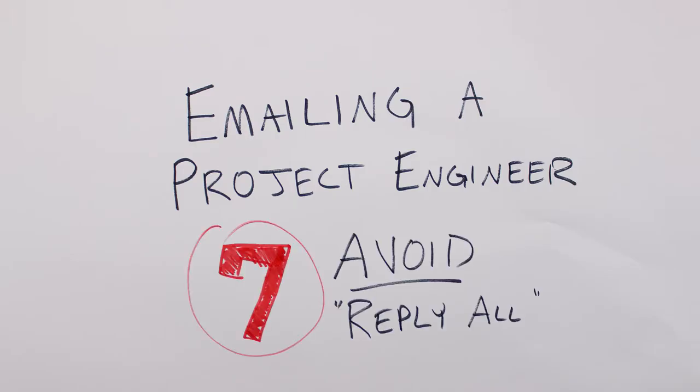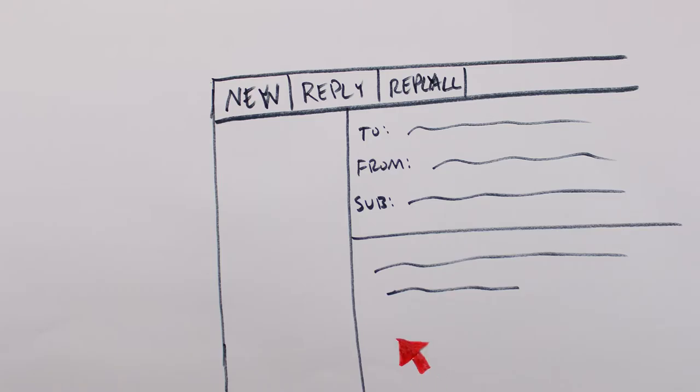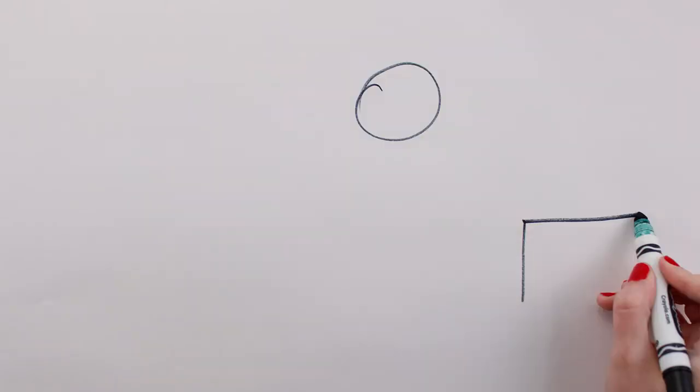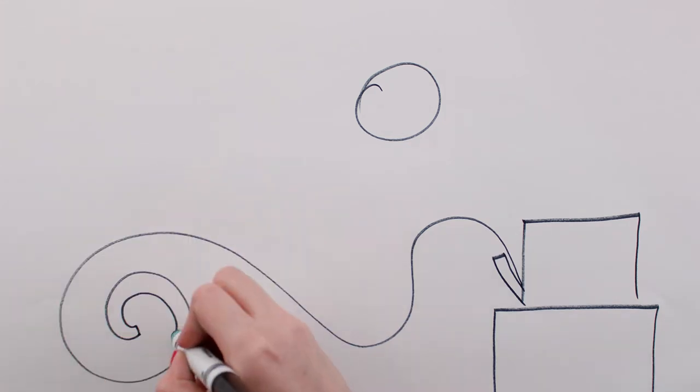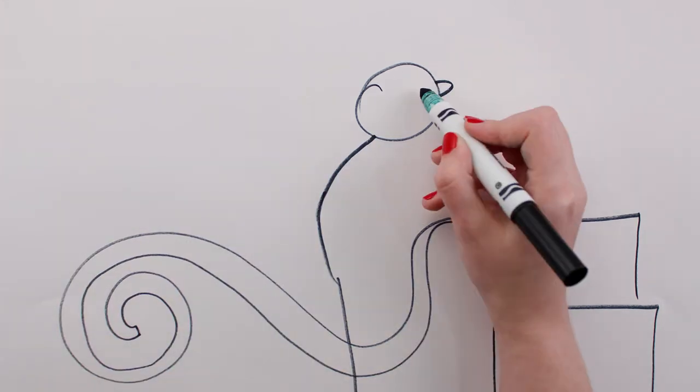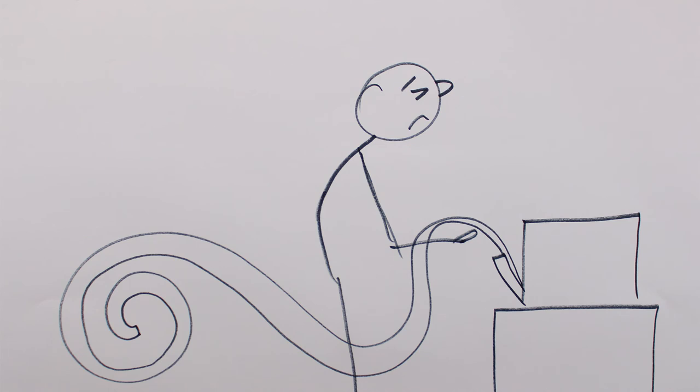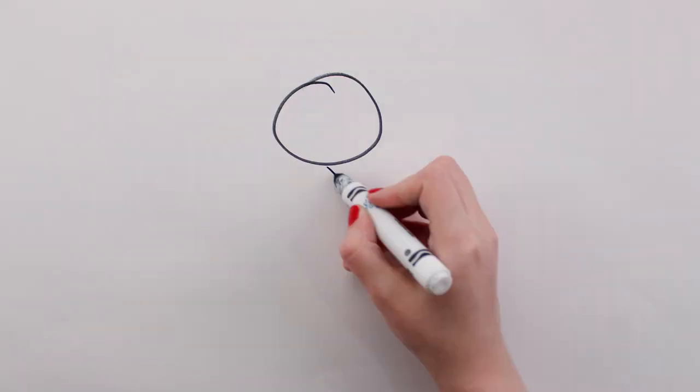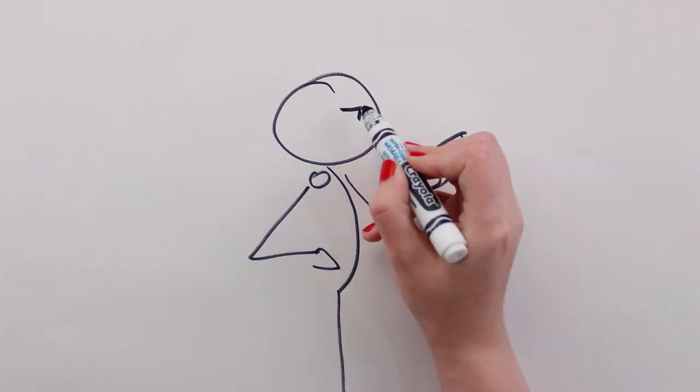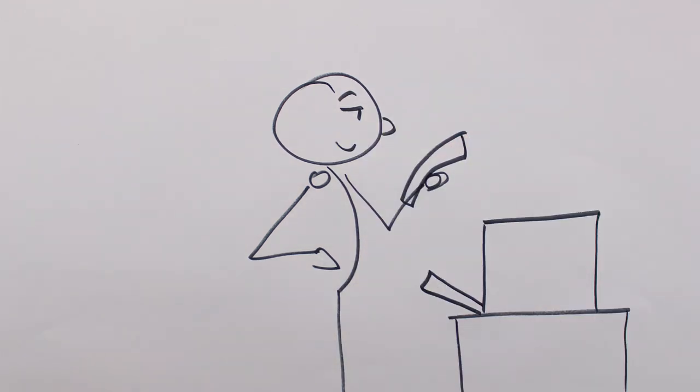Avoid the reply all button. Create a new email whenever possible. There have been many times when I wanted to print an email to take with me to a meeting, but when I hit the print button, I found that the email is actually eight pages long and is the end result of two weeks of discussion with six different parties arguing over a point that has nothing to do with me in the first place. Keep the email to one printed page if possible. Previous email discussions can be called up later if supporting information is required.